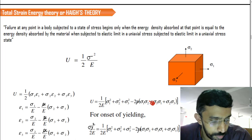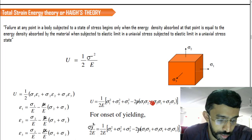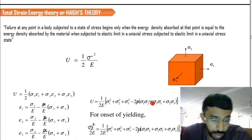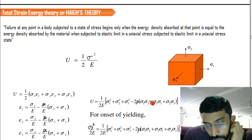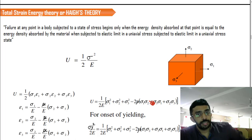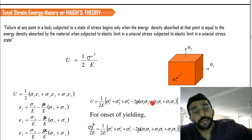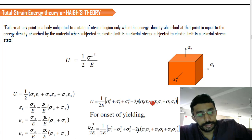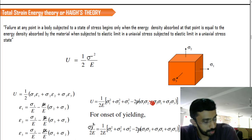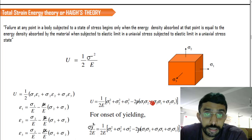In this session, we will discuss the total strain energy theory, which is the fourth theory of failure. It is otherwise called the Haigh's theory. Compared with the previous three theories of failure, this has a key difference: previous theories compared everything with normal stress, normal strain, and shear stress.